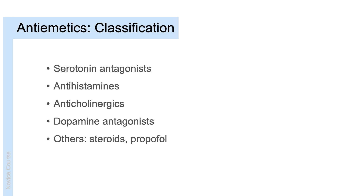We can classify antiemetics based on their mechanism of action. Most of the commonly used agents act to antagonise the emetogenic neurotransmitters that act on the chemoreceptor trigger zone. These include serotonin or 5-HT3 antagonists, antihistamines, anticholinergics which antagonise the action of acetylcholine, dopamine antagonists, and also other drugs that can be classified into a further group, such as steroids.